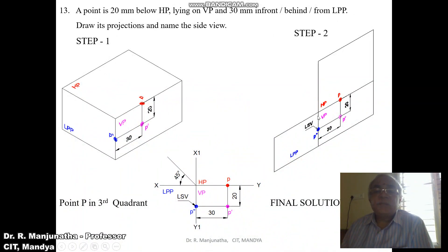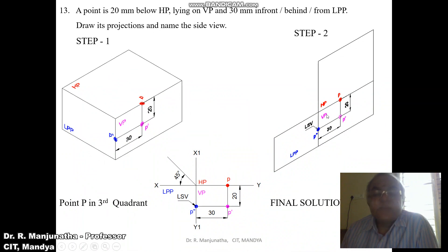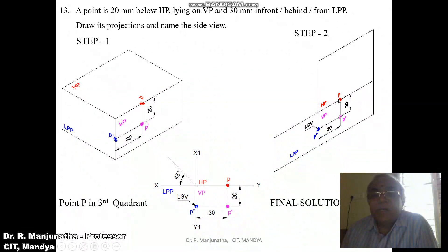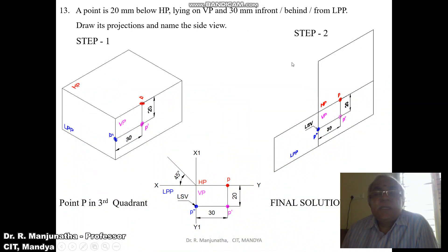Since the point is lying on VP, we get the top view distance. When rotated, HP will be rotated above by 90 degrees and LPP will be rotated 90 degrees anti-clockwise, so VP and LPP will both be on the same plane. The distance with respect to the profile plane is seen in VP and also in HP. When you look from the front view, 20mm below HP is seen in the vertical plane — from this point you measure 20mm and mark this point as p-dash. Since the point is lying on VP, it should be on HP, so we get it on the XY line and mark it as p.